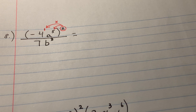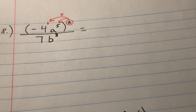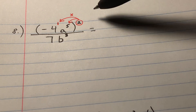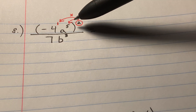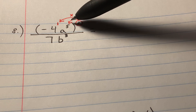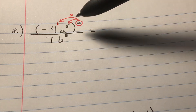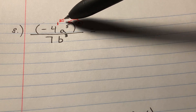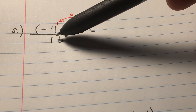We have the outside exponent two, which is being multiplied by all the exponents inside the parentheses. Notice again the parentheses is only around the top of the fraction bar, not around the entire fraction. Therefore the exponent only distributes to the top exponents and does not affect the bottom exponents at all.